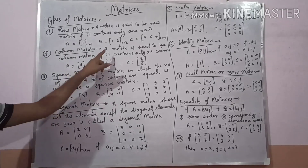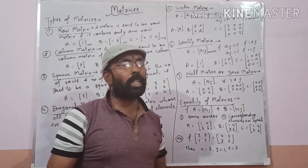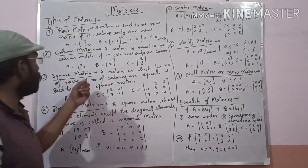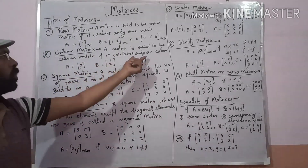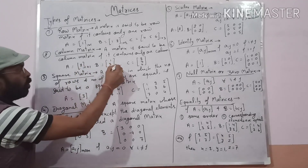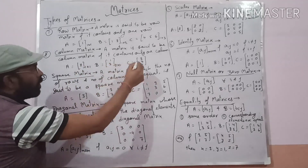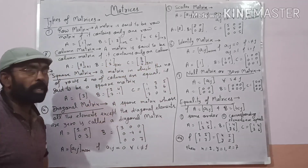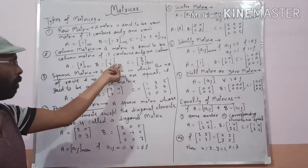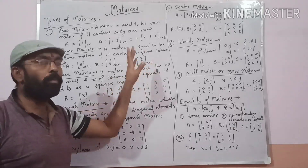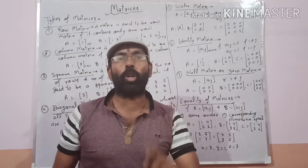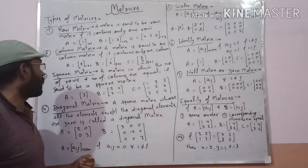Next is the column matrix. A matrix is said to be a column matrix if it contains only one column. For example, matrices with orders 1 by 1, 2 by 1, and 3 by 1. In all cases, the number of columns is 1. That is called the column matrix.